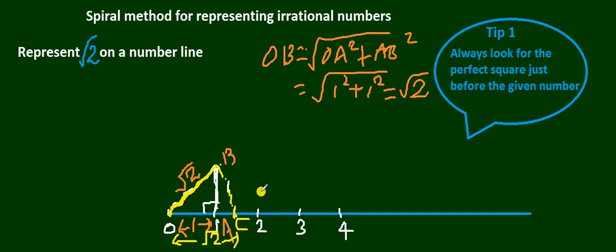Now why is this method called a spiral method? For that, we have to take one more example. So let my second example be root 3. Now the spiral will continue here. For root 3, again if you see, the perfect square number before 3 is also 1. So we have already initiated the process.